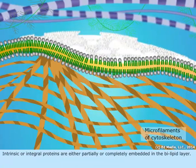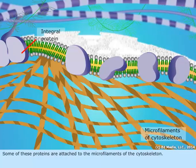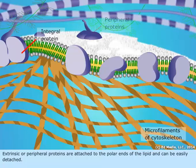Intrinsic or integral proteins are either partially or completely embedded in the bilipid layer. Some of these proteins are attached to the microfilaments of the cytoskeleton. Extrinsic or peripheral proteins are attached to the polar ends of the lipid and can be easily detached.